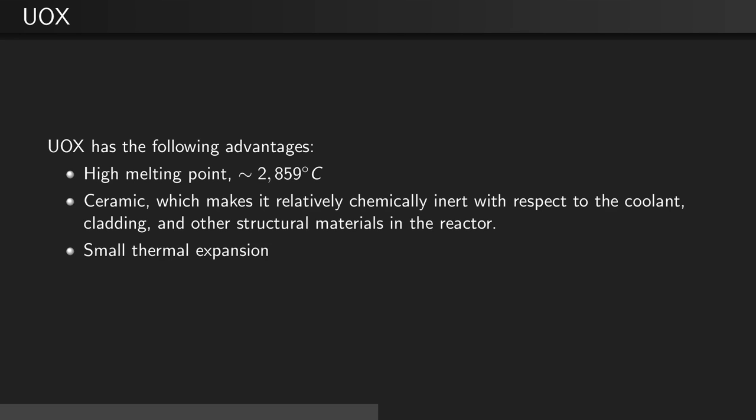UO₂ has the following advantages: it has a high melting point of approximately 2,900 degrees Celsius. It's a ceramic, which makes it relatively chemically inert with respect to the coolant, cladding, and other structural materials in the reactor. And it has a very small thermal expansion coefficient.